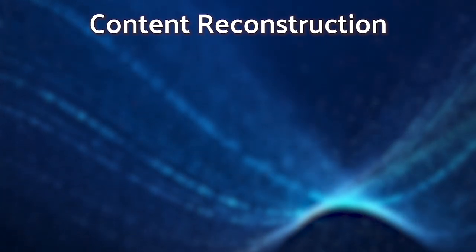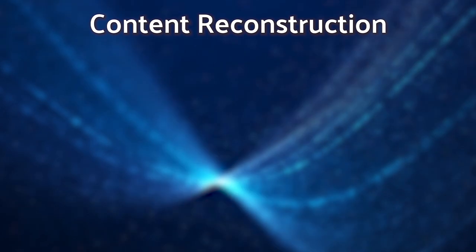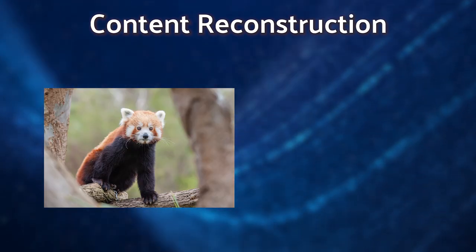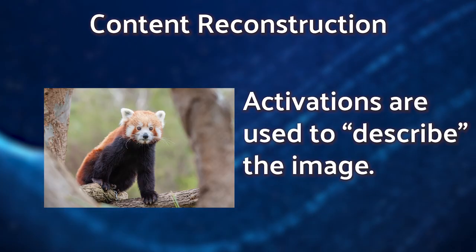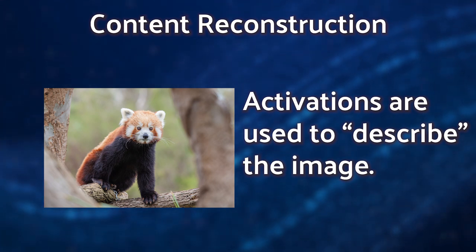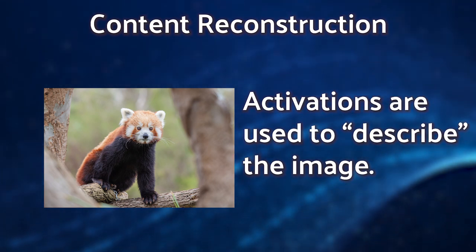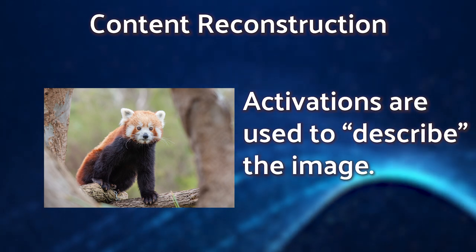Let's start by looking at the content image. We want to have our neural network reconstruct the image using only partial information. Logically, if something were to match that content image, it would have the same activations inside of our convolutional neural network.